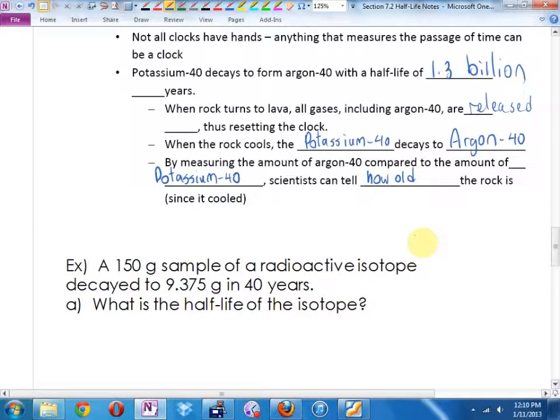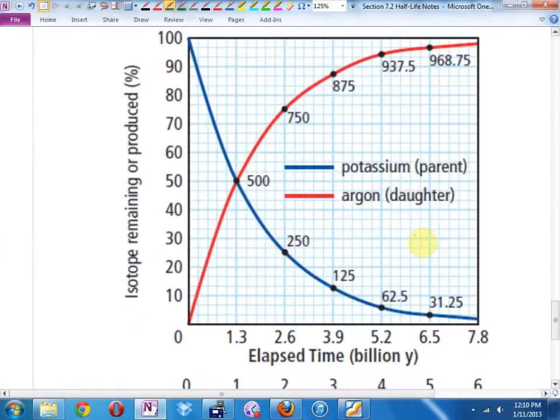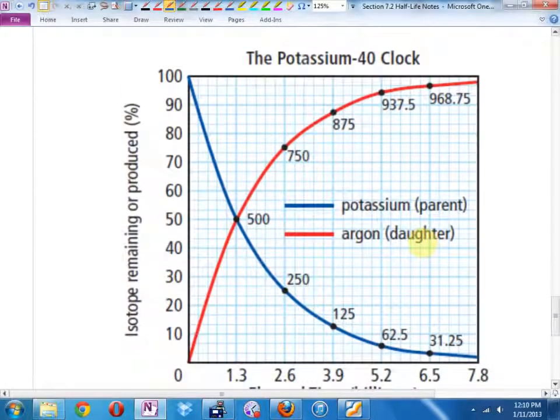I wrote down an example. We're going to come back to it. This isn't in your notes. You'll write it down in a second. But look at this. Here's your potassium-40 clock. So, the parent is the blue graph. Originally, you start out with 100% potassium-40 and no argon. Melted rock. You really want to come spend some quality time with me. So, we have no argon at all. But as the potassium decays, as there's less and less potassium, what do you notice happens with the argon? There's what? More and more.